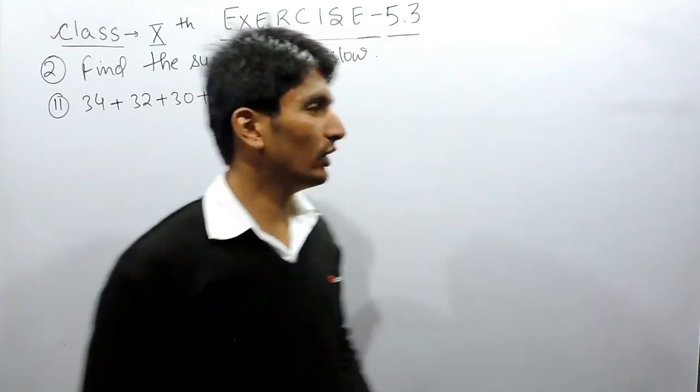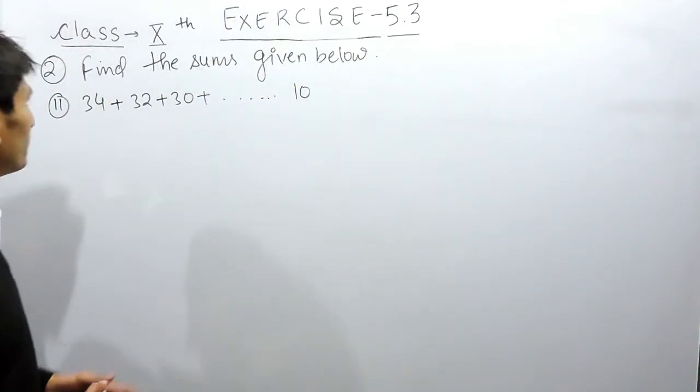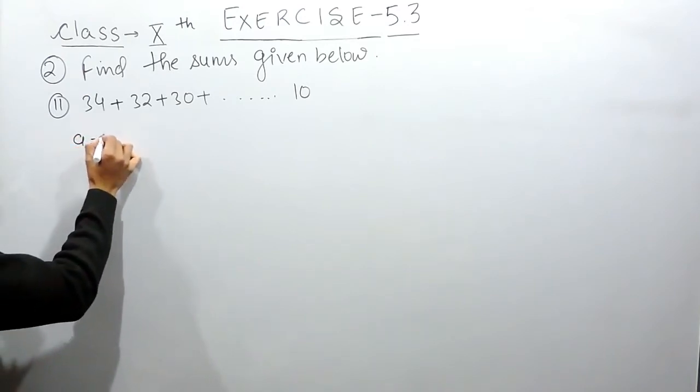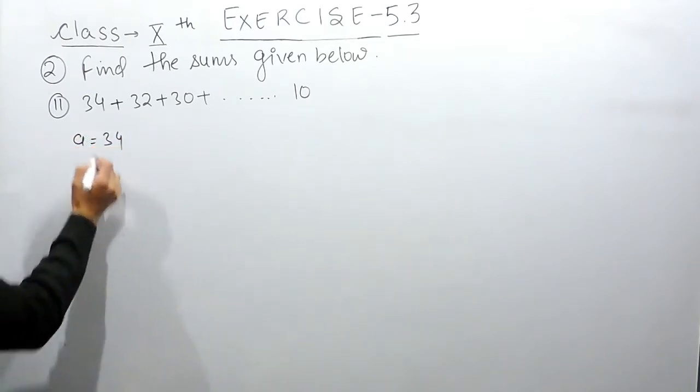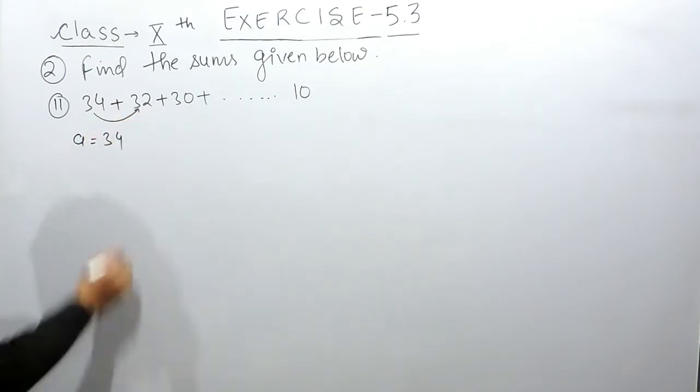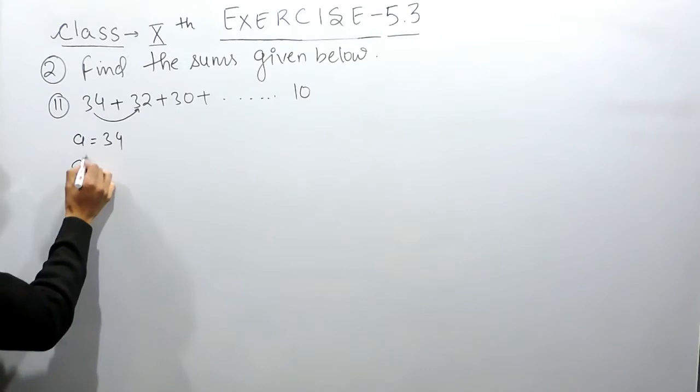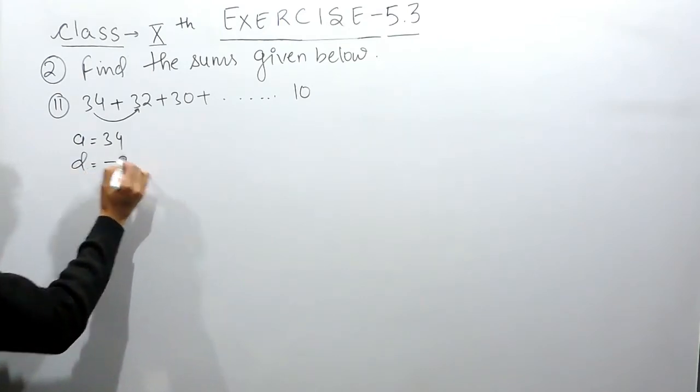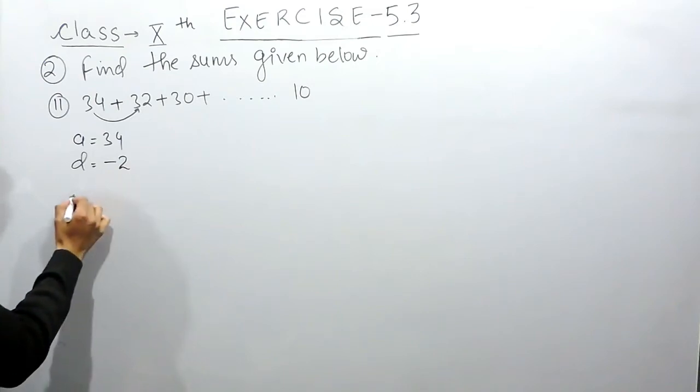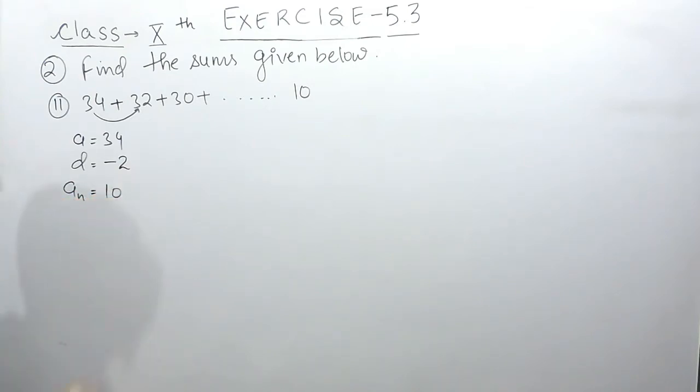Hello everyone, in this video we are going to solve the second part of question number two. In this case, you have to find the sum of this AP where the first term is given as 34. To form the second term, you subtract 2, so the common difference is -2, and the last term is 10.